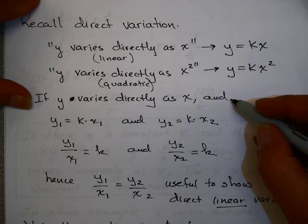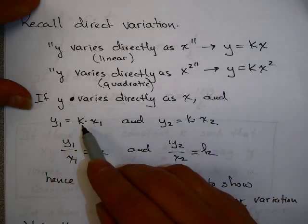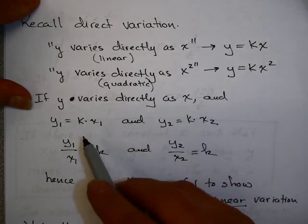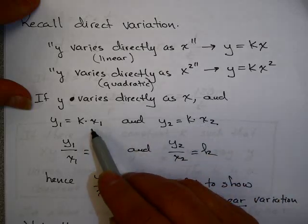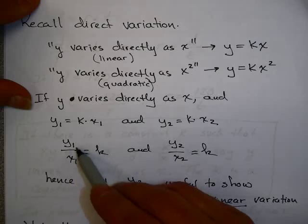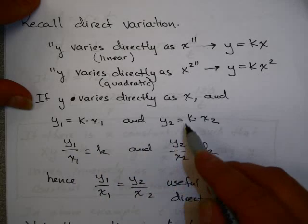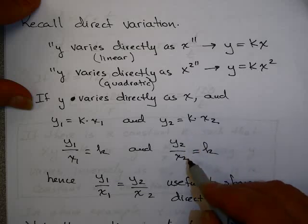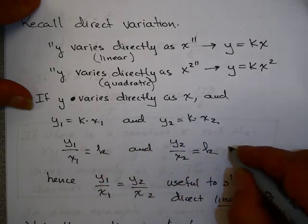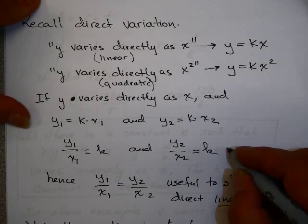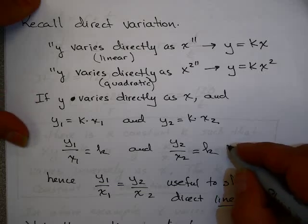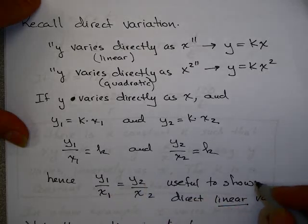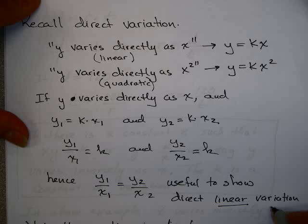If y varies directly as x, and y1 equals k times x1, and y2 equals k times x2, then dividing both sides gives y1 over x1 equals k, and y2 over x2 equals k. Since k is a constant of variation or proportionality, we can say y1 over x1 equals y2 over x2, which is useful to show direct linear variation.